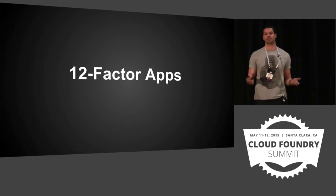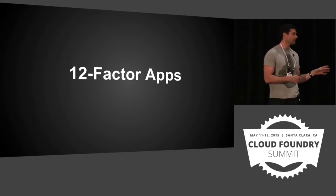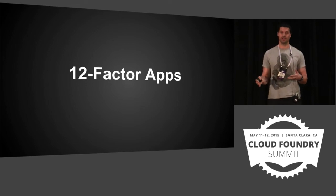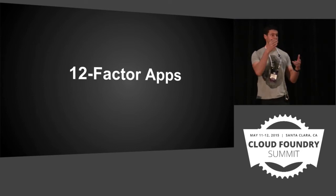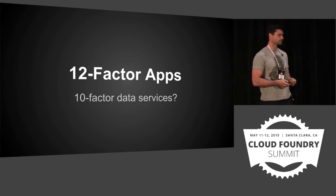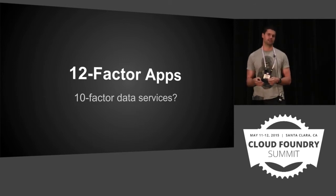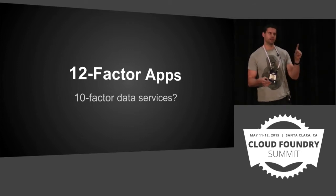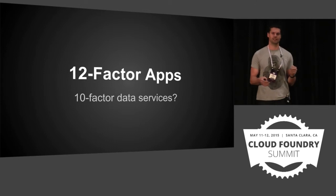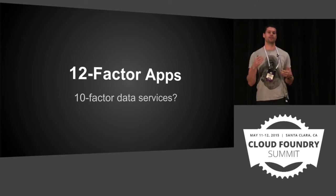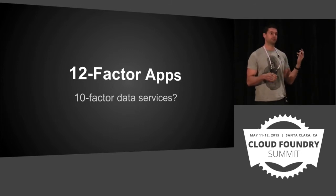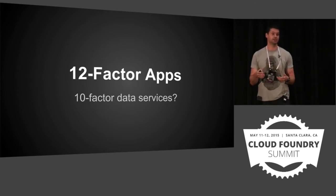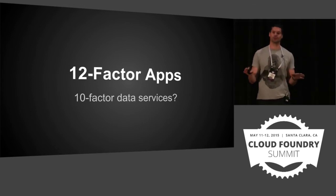Cloud Foundry is focused on 12-factor apps — a set of patterns that came out of the guys at Heroku — which enables applications to be effectively PaaS-compatible and cloud-native. But some of the 12-factor app principles dictate that we should externalize our state. So do we move to 10-factor data services? The two factors we're going to violate: first, we are not going to externalize state — we're going to choose to internalize our state. Second, our processes are going to have to stop being ephemeral because there may be important data there. So we're going to drop down from 12-factor to 10-factor. There's a talk tomorrow — Ted and Caleb are talking about persistence in Diego — which is a continuation of this talk, and a far more positive one.